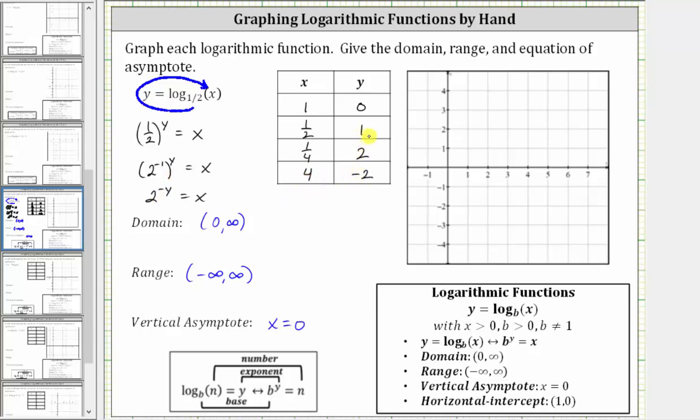And now before we plot these points, let's sketch the vertical asymptote of x equals zero. X equals zero is the y-axis.